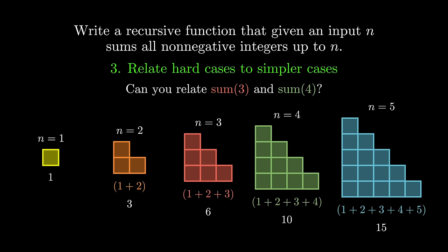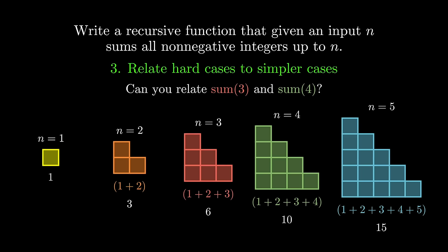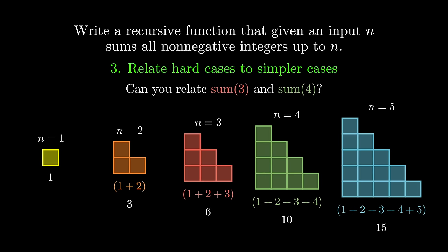One interesting relationship you may have noticed is that if we know the answer to the n equals 4 case, all we need to do is add 5 to this answer to get the solution to our n equals 5 case. And similarly, if we know the answer to the n equals 3 case, we can get the answer to the n equals 4 case by adding 4. It's not too hard to convince yourself that this should be true in general, but feel free to try some larger cases to verify.